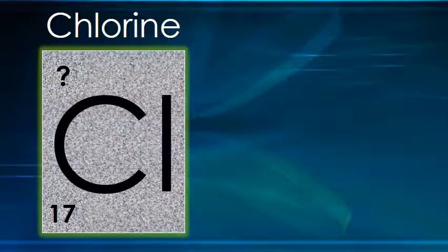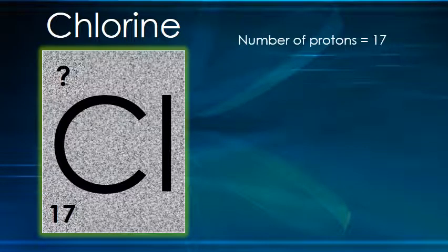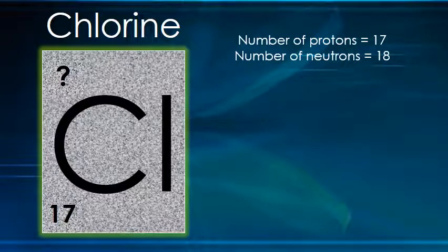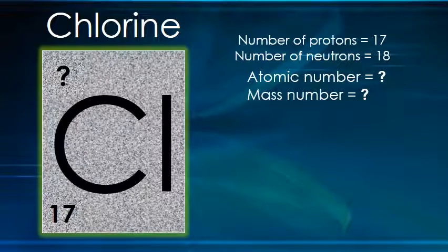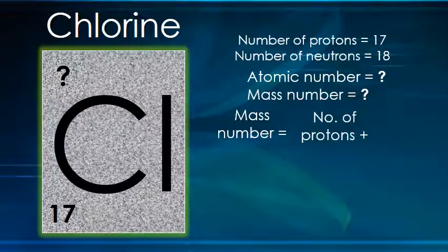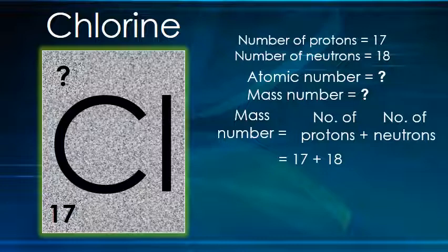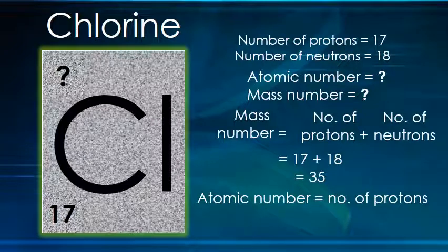In a chlorine atom, the number of protons are 17, which means its atomic number is 17. To find the mass number: number of protons plus number of neutrons, that is 17 plus 18, gives a mass number of 35 for the chlorine atom. The atomic number for chlorine is equal to the number of protons, which is 17.